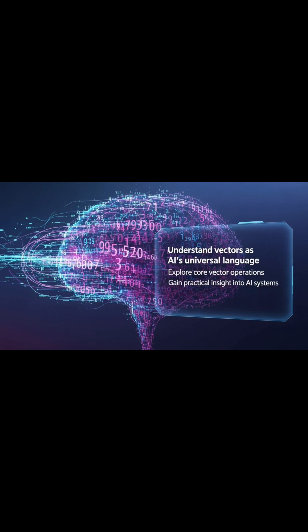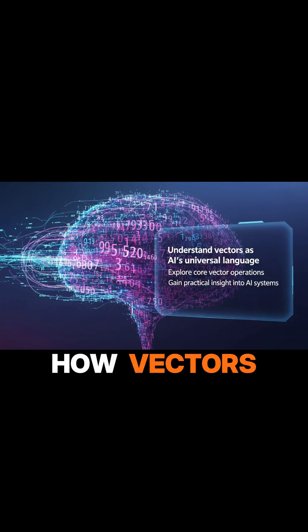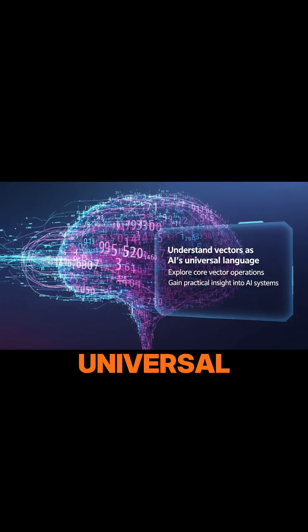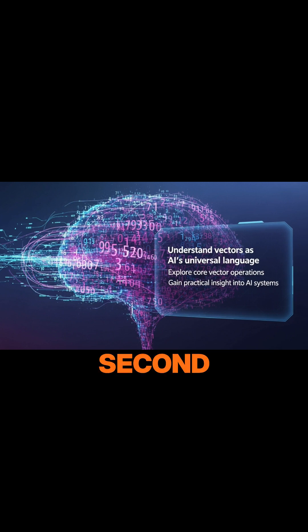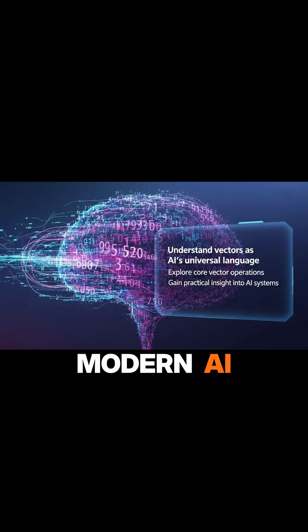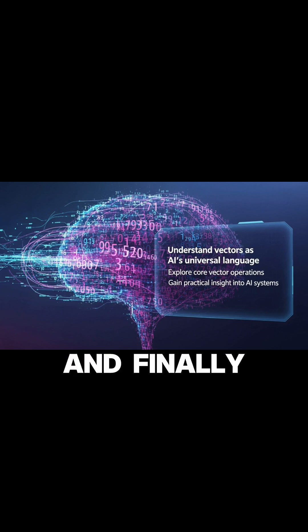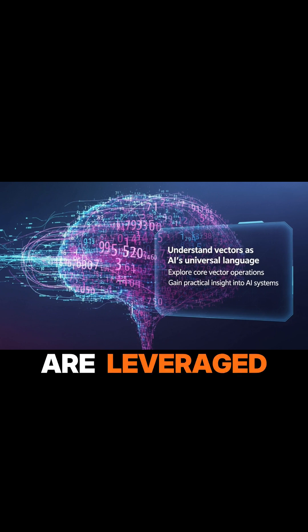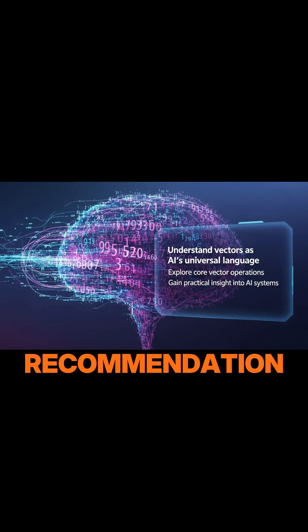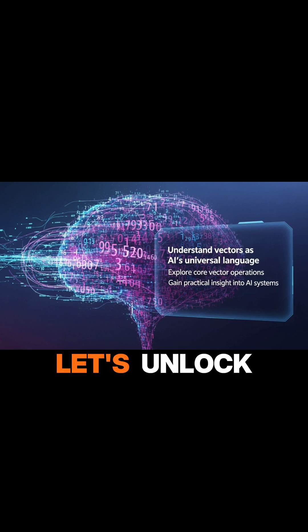Our objectives are clear. First, you'll understand how vectors serve as AI's universal language, representing diverse data types. Second, we'll explore the core vector operations that fuel modern AI models, from simple arithmetic to measuring similarity. And finally, you'll gain practical insight into how these operations are leveraged to build real-world systems, like recommendation engines. Let's unlock the intelligence behind AI, one vector at a time.